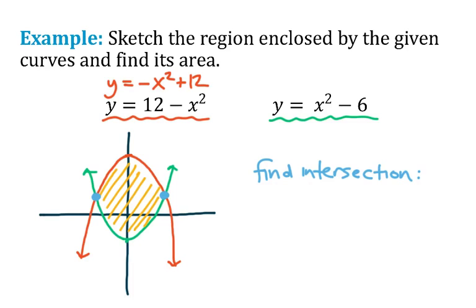So I will set 12 minus x squared, the first function, equal to x squared minus 6. I'm going to go ahead and just move all my x squareds to one side. So I'll add x squared to the right. I'll add 6 to the left. We'll divide by 2. And we'll square root both sides. So it looks like the x locations of intersection are at 3 and negative 3.